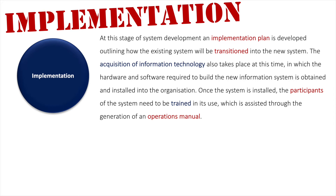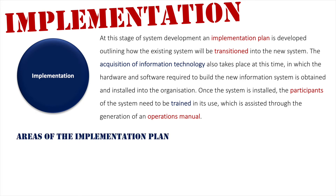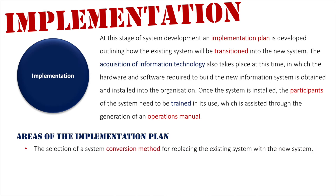The acquisition of information technology also takes place at this time, in which the hardware and software required to build the new system is obtained and installed within the organization. Once the system is installed, the participants of the system need to be trained, which will be assisted through the generation of an operations manual. We'll break down what the implementation plan involves with four key points.